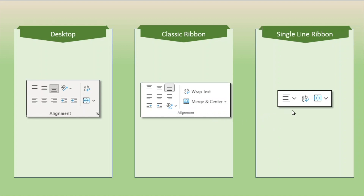Then we come to the single line ribbon, and we have dropdowns — thank goodness — because here this looks like left aligned, but where are all those other alignments? We need to look for it. And this is also merge and center, but it has a dropdown that will help me figure out the rest of what this single line ribbon can do.